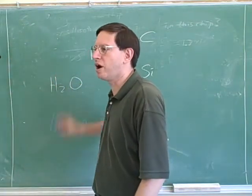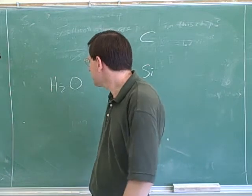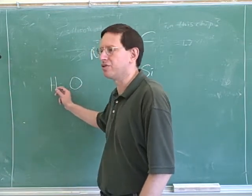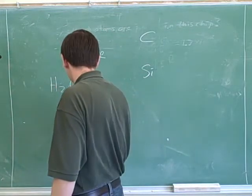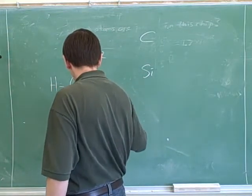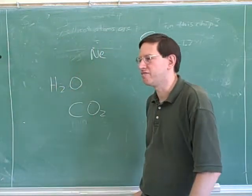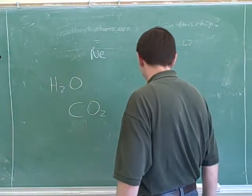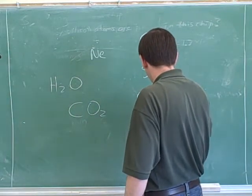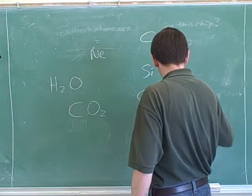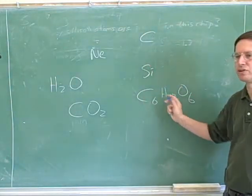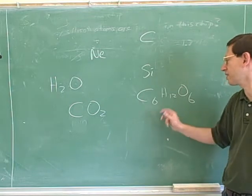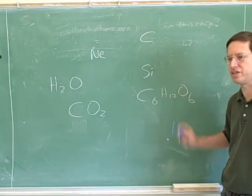This is the molecule of water. This means that water consists of molecules that have one oxygen and two hydrogens each. Carbon dioxide consists of molecules that contain one carbon and two oxygens each. This is the formula for glucose, which tells us that glucose consists of six carbons, twelve hydrogens, and six oxygens each.